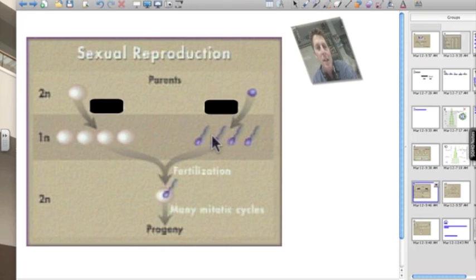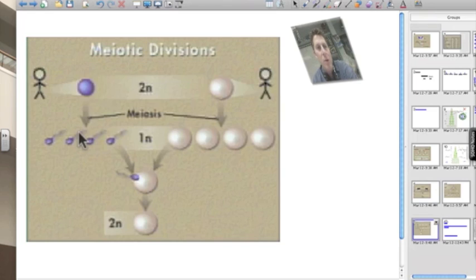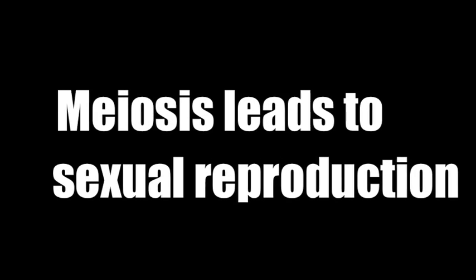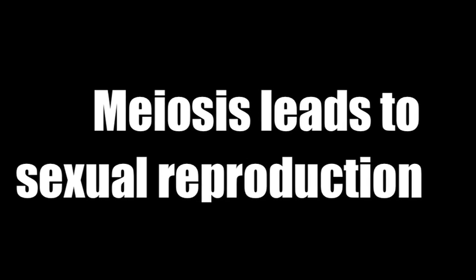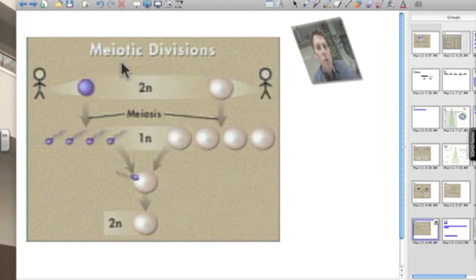So there's another process that has to occur in order to get to this thing we call a sperm or this thing we call an egg, and that new process is meiosis. Meiotic divisions — going through meiosis to create sperm and egg. So meiosis is the topic for today.